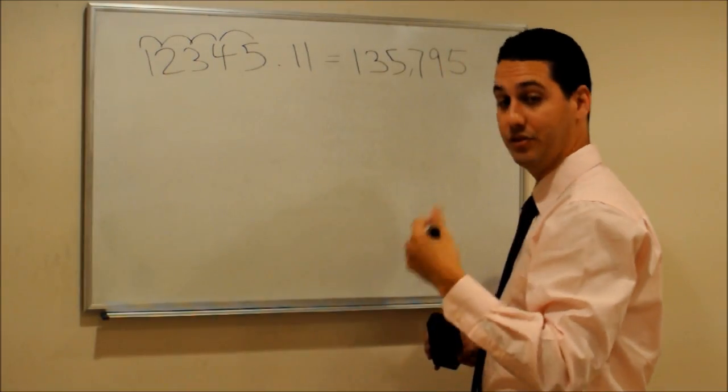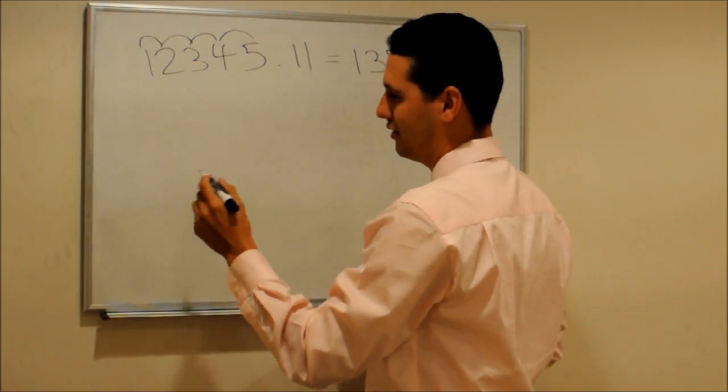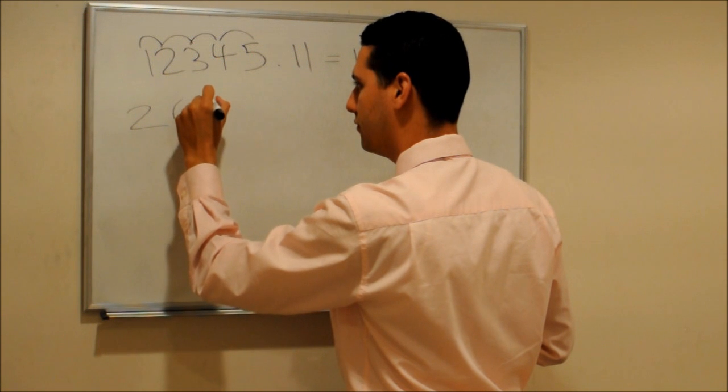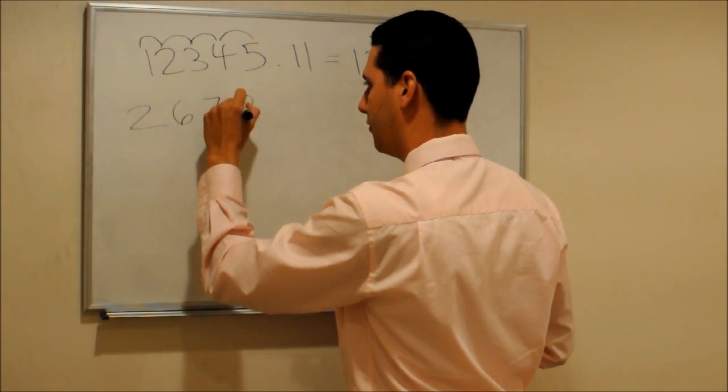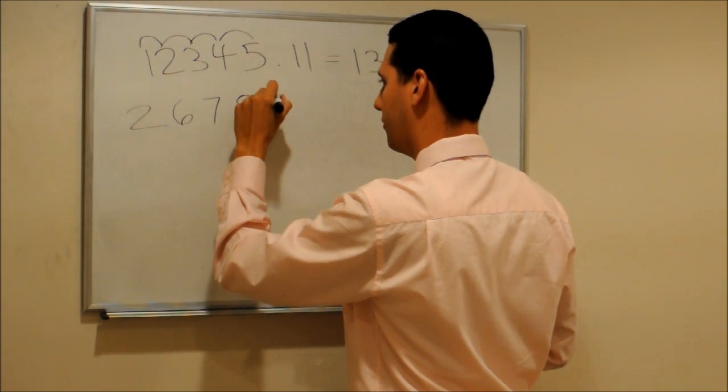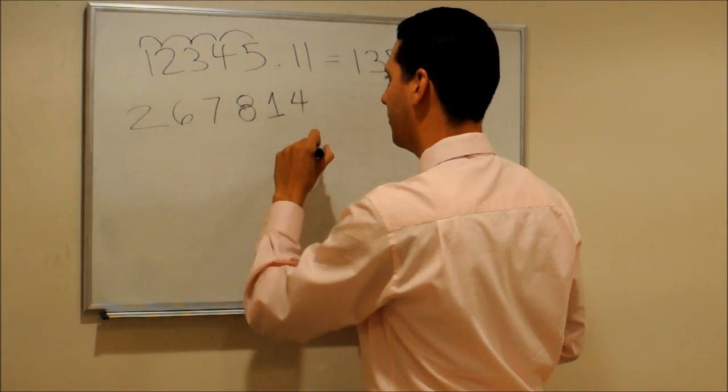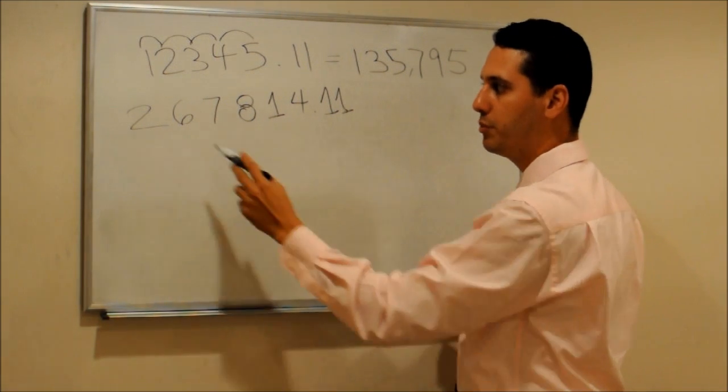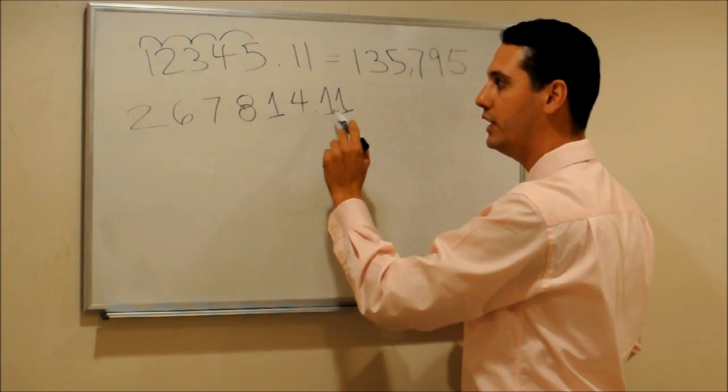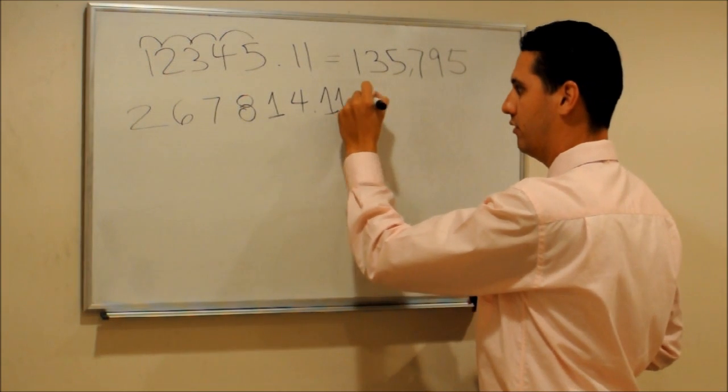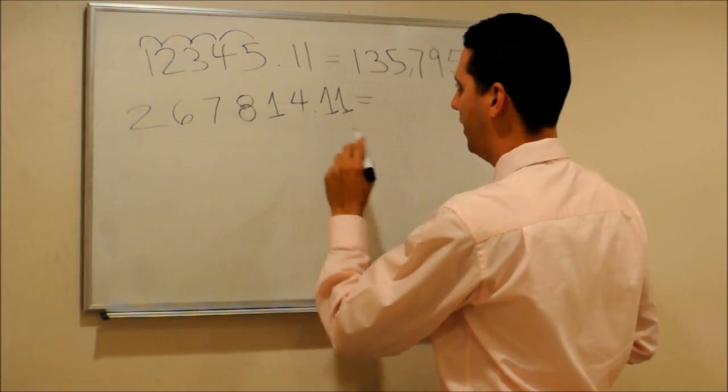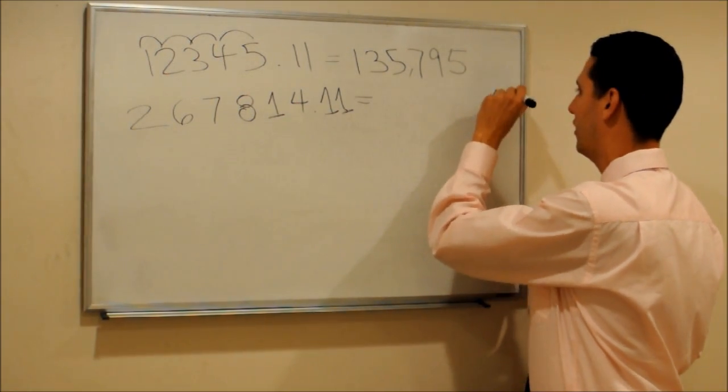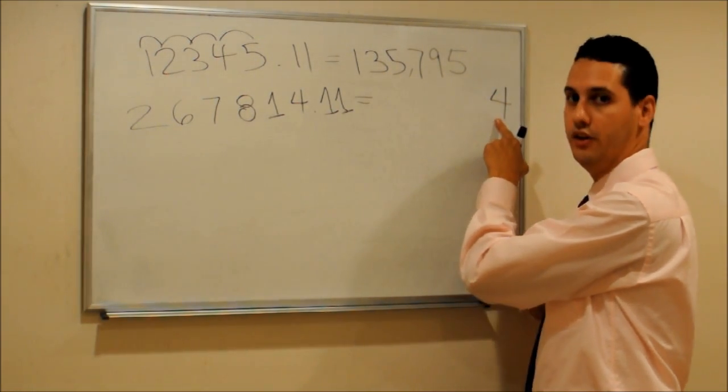Let's try another example, harder than this one. For example, let's say we want to multiply 267,814 times 11. Let's do it.